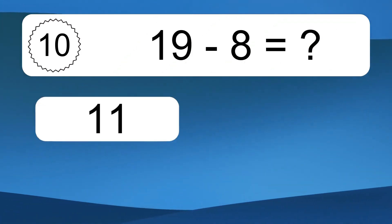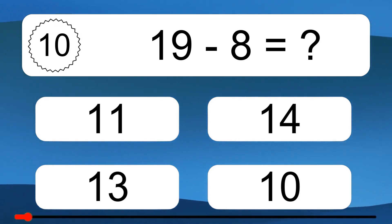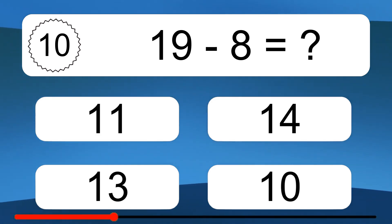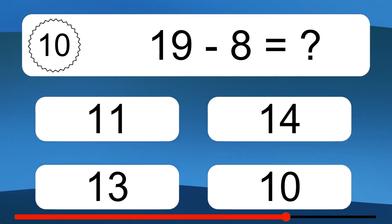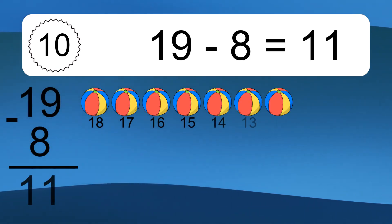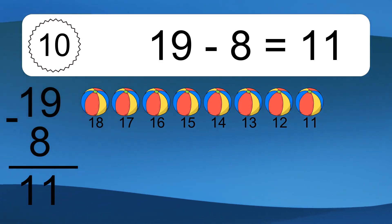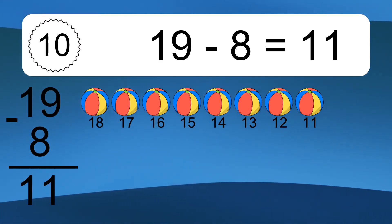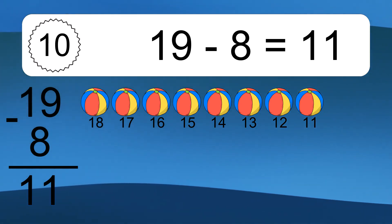19 minus 8 equals what? 19 minus 8 equals 11. Let's count it: 18, 17, 16, 15, 14, 13, 12, 11.